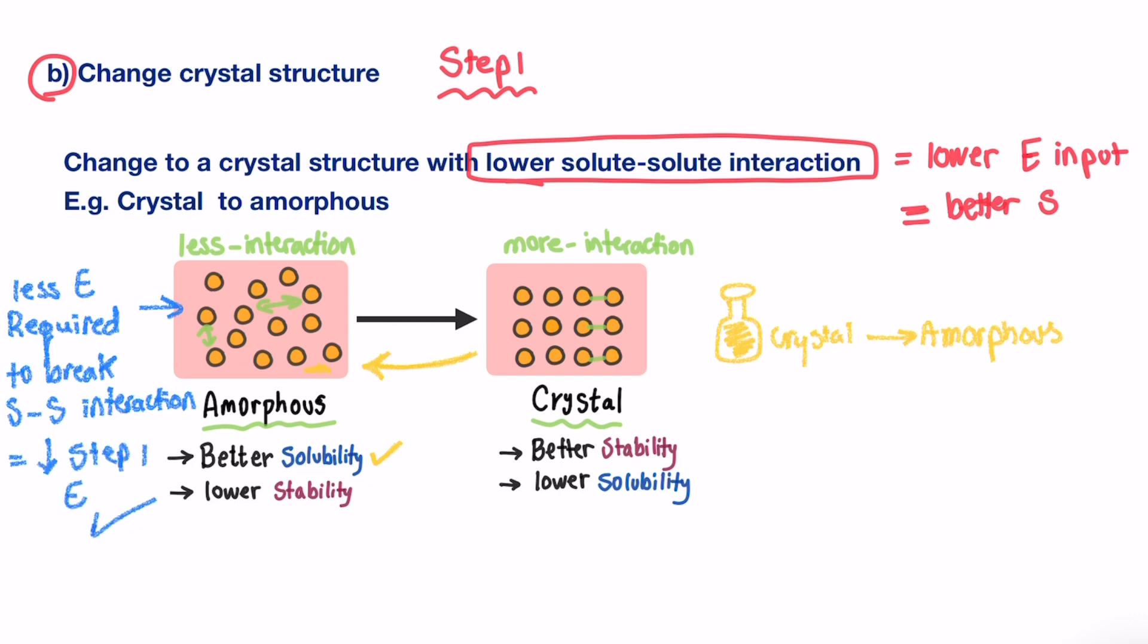If it is that simple, then why don't we make all poorly water-soluble drugs in amorphous form so we can overcome this whole drama? Well, the issue with amorphous is the physical stability of these drugs. On shelf or during storage, amorphous will automatically change back to crystal, because it is more stable form. But unfortunately, crystal is a poorly soluble form of the drug. So generally, this method is effective, but has an issue with the drug's stability.